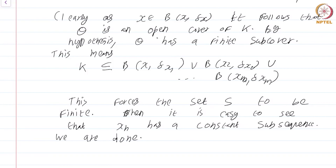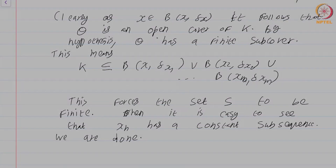So we have now characterized compactness in terms of open covers. Let me make the general remark that historically, the proof that any closed and bounded subset of R has an open cover with a finite subcover is what was classically known as the Heine-Borel theorem. I have stated the Heine-Borel theorem slightly differently, characterizing compactness in terms of sequences, which I believe is a much better approach for such an elementary course. This is a course on real analysis, and you have just watched the module on equivalent notions of compactness.